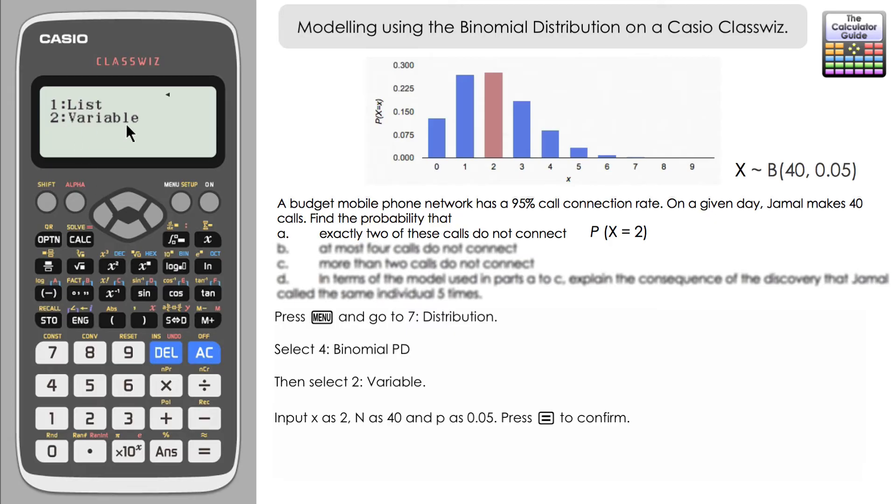And then we have the variables here rather than a list of data. So we're going to press two. And we've got to input x, n and p. So our x for part a is two, it's two calls, n is 40. Jamal made 40 calls in total. And a probability of do not connect or not connecting is 0.05. So just input those figures. And then when you're done, you just need to press equals to confirm and that should generate a probability for us. And here's a probability 0.2777 to four decimal places and so on.